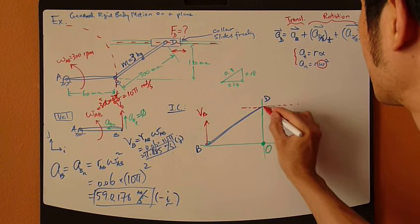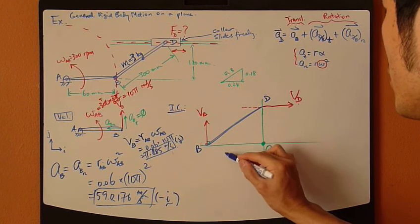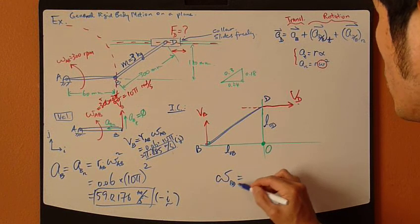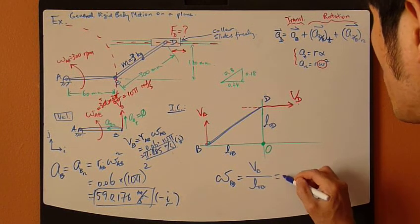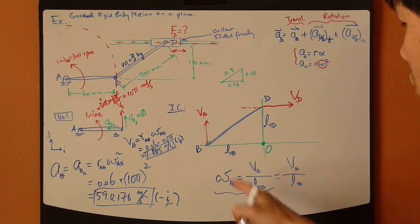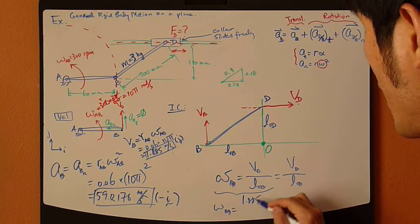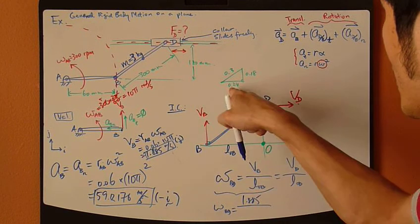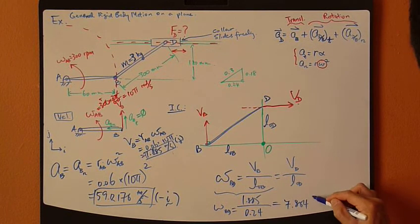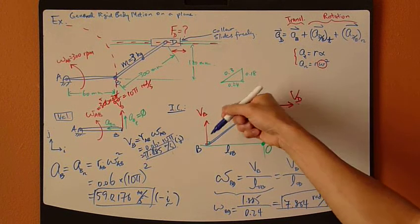So that's my VD. So, now for instantaneous center, L O B, L O D. So, my Omega VD equals VB divided by L O V, also equals to VD L O D, but we're not interested in this. We can just use this right here to find the Omega VD. So, Omega VD equals VB, which is 1.885, divided by L O B, which is up here. 0.24 meters. And that's 7.854 radian per second. And that's clockwise direction. So, Omega VD goes clockwise.